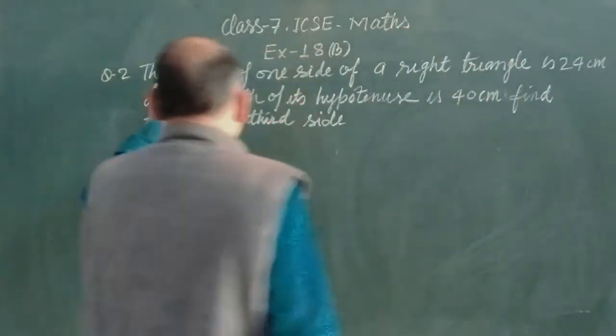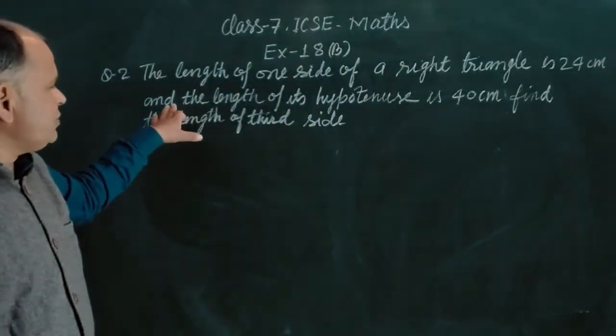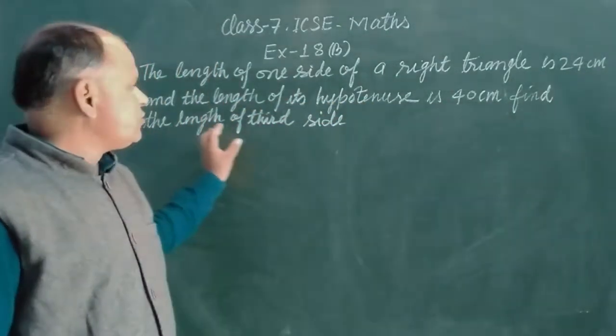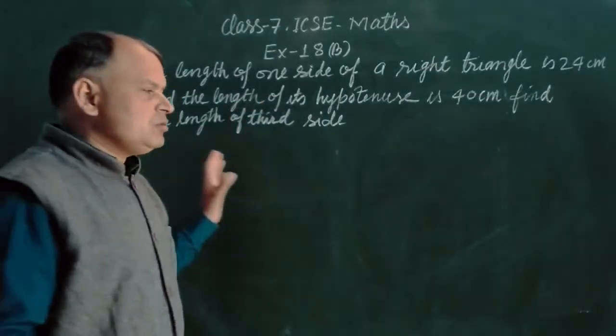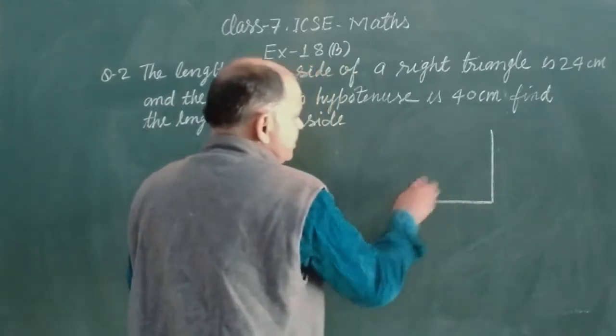Next question is: the length of one side of a right angle triangle is 24 cm and the length of its hypotenuse is 40 cm. Find the length of the third side.